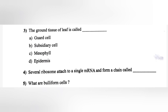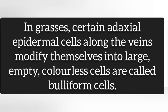Question 5: What are bulliform cells? Answer: In grasses, certain adaxial epidermal cells along the veins modify themselves into large, empty, colorless cells called bulliform cells.